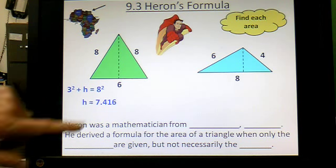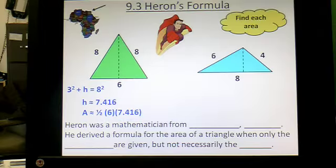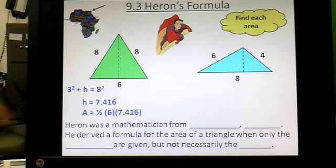And once you have your height, you multiply your base. And don't forget again to divide by 2 at the end. So you multiply all that stuff out. You could get, I think it's around 22 for an approximate area for that green triangle. Pretty simple. You've been doing that for a while.